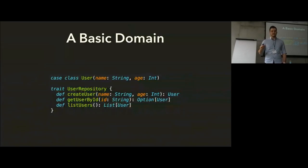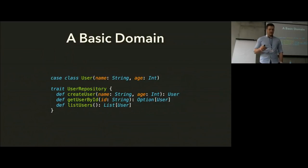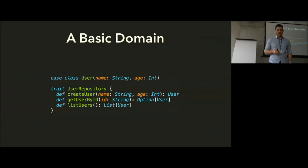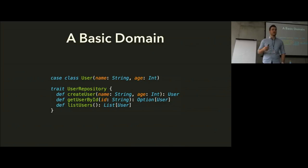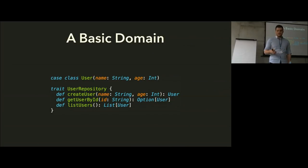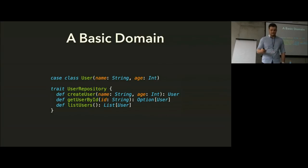Let's say we have a basic domain of just user operations. We'll have something like a user which just takes a name and an age, and we'll have some functions that act within that domain: create user, get user by ID, and list users. You can see their return types are very simple and descriptive in terms of what the domain needs to do.